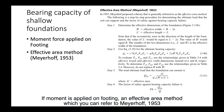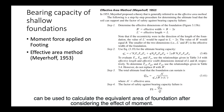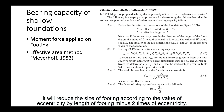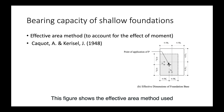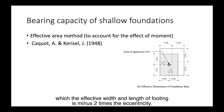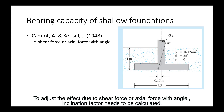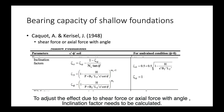If moment is applied on a footing, an effective area method — referring to Meyerhoff 1953 — can be used to calculate the equivalent area of the foundation. After considering the effect of moment, it will reduce the size of the footing according to the value of eccentricity: length of footing minus 2 times eccentricity. The effective width and length of the footing is reduced by 2 times the eccentricity. To adjust for shear force or axial force with angle, an inclination factor needs to be calculated.